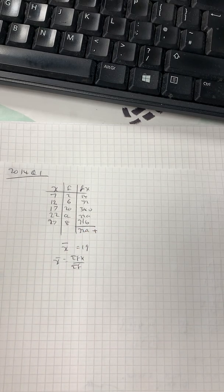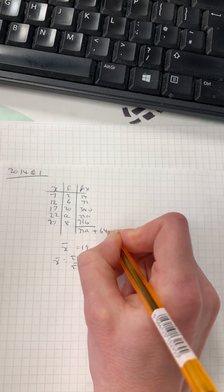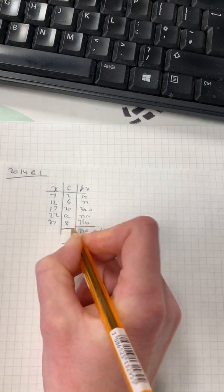So it's 216, add 340, add 72, add 14. It gives you 642.